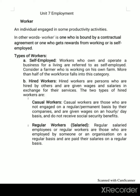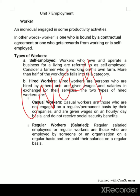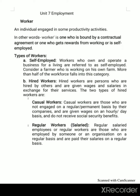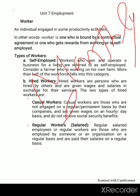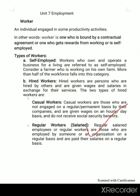Hired workers are further classified into two types: casual workers and regular workers. Those working on the basis of daily wages are called casual workers. Those who work on the basis of a monthly salary are called regular or salaried workers.